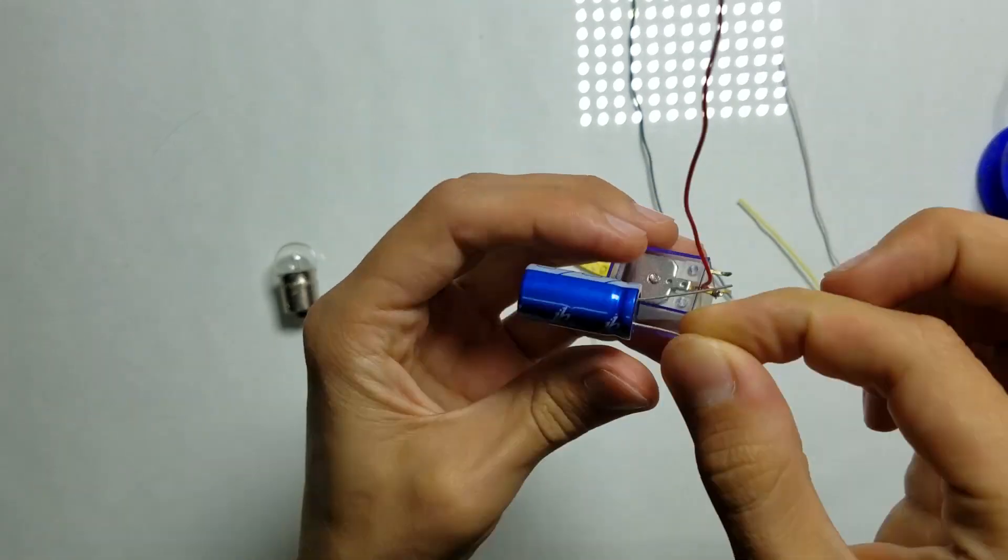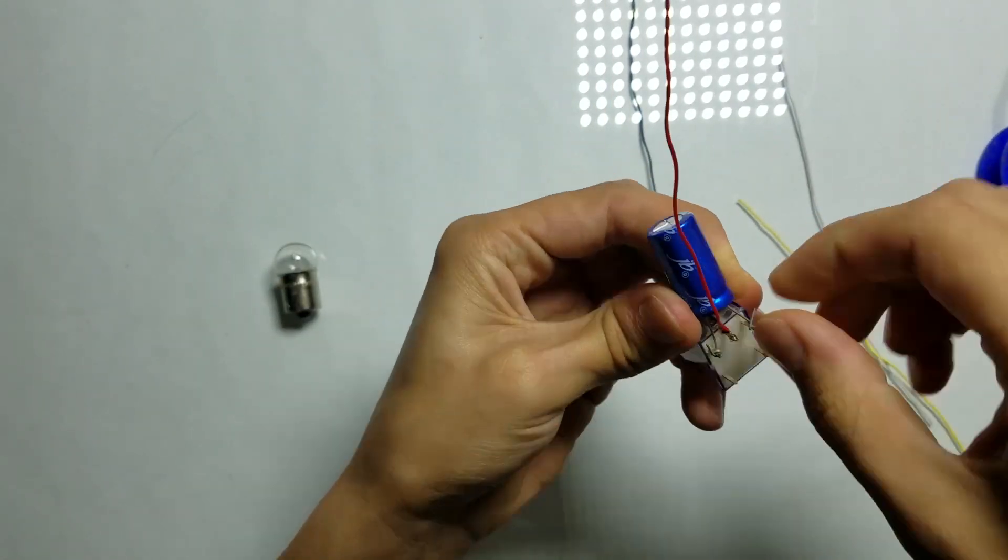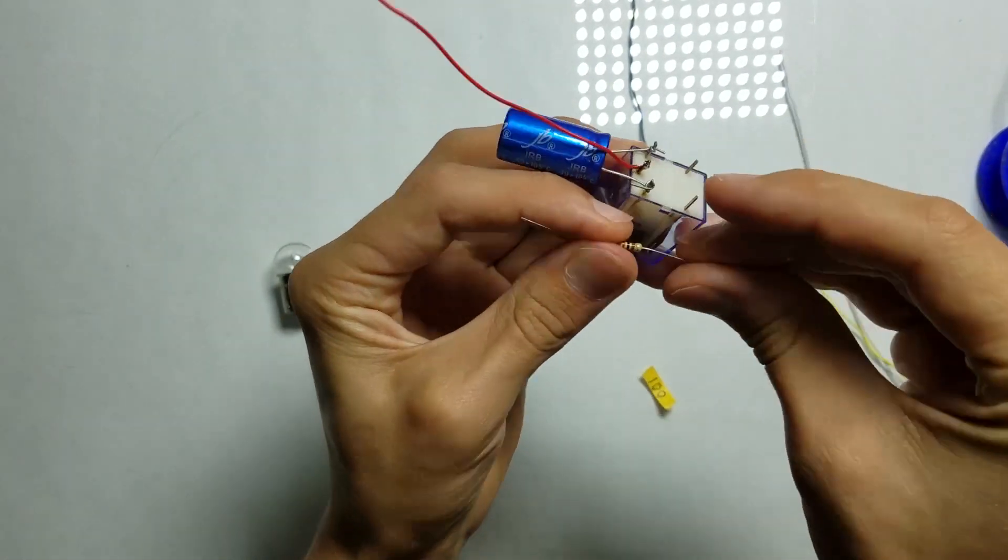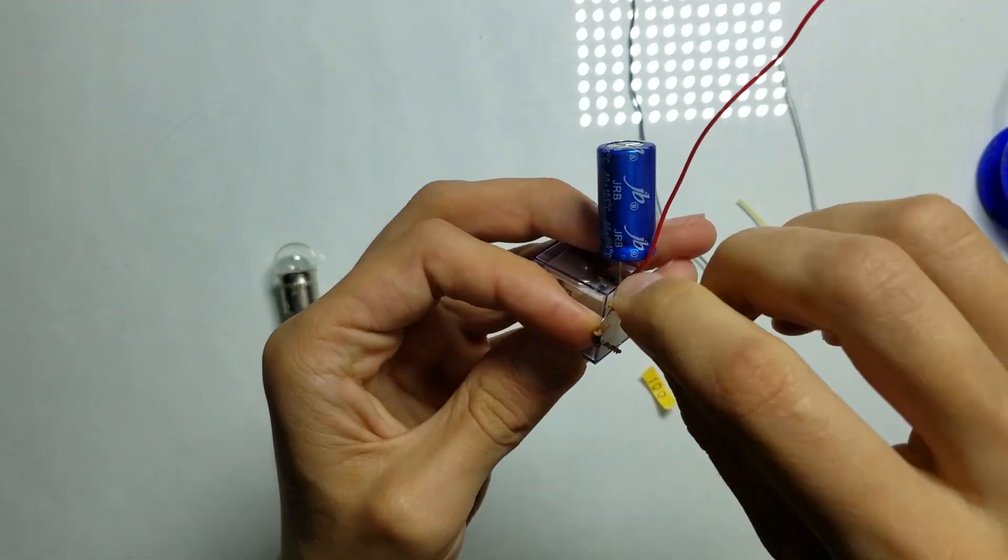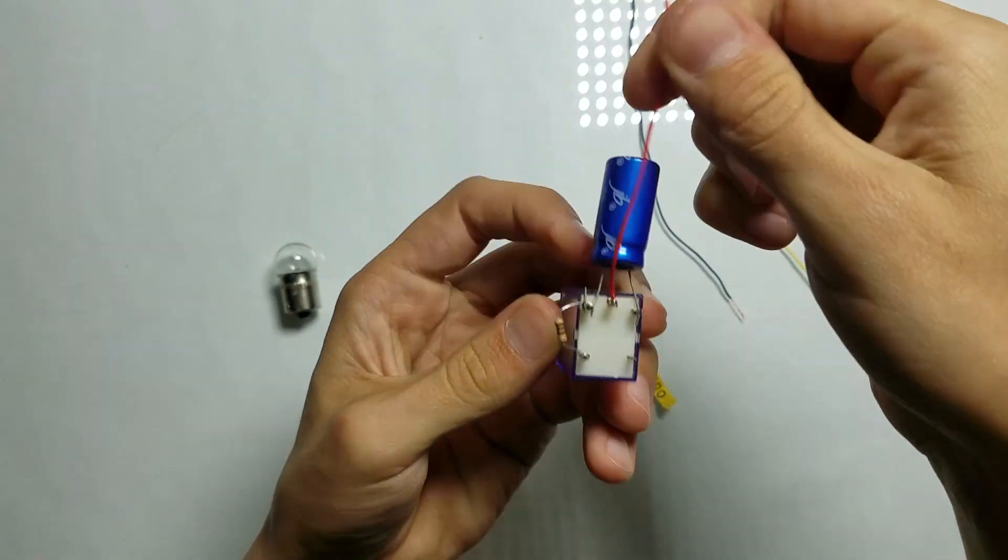Now let's connect the 2200 microfarad capacitor to the coil leads of the relay. And let's connect the 100 ohm resistor between normally closed contacts of the relay and the coil lead of the relay.